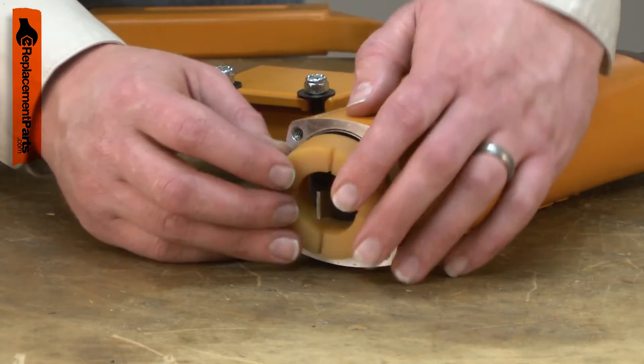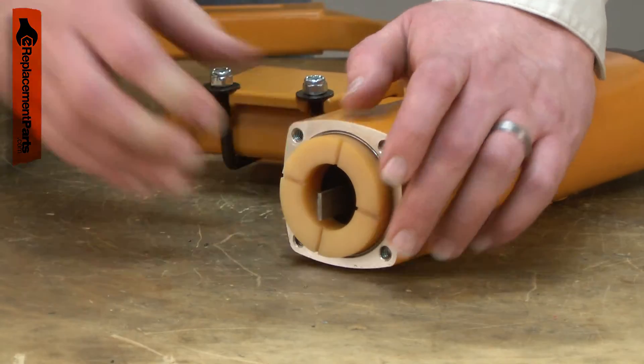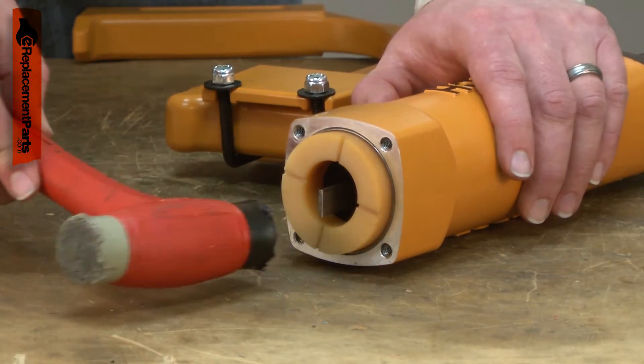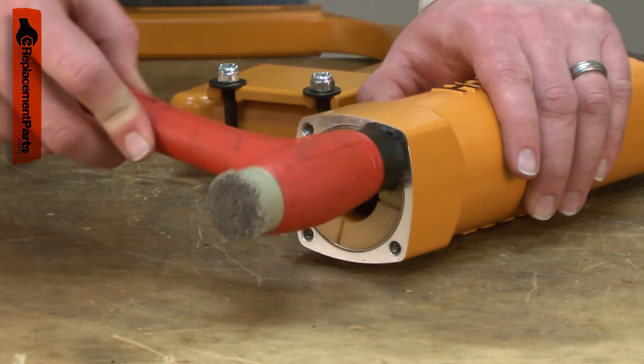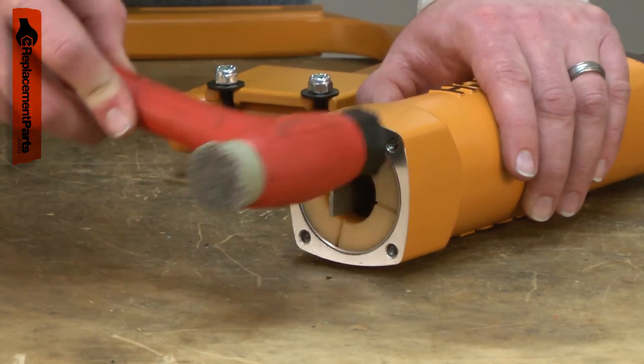To install the bumper, I place it into the cylinder and then I'll use a rubber mallet to tap it into place just until it's flush with the cylinder.